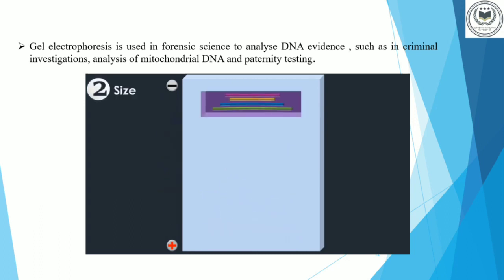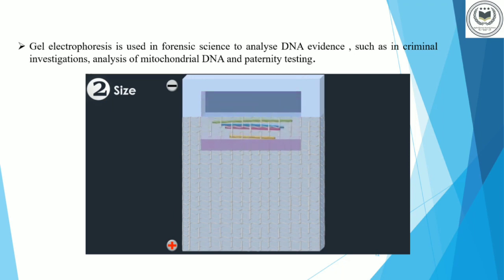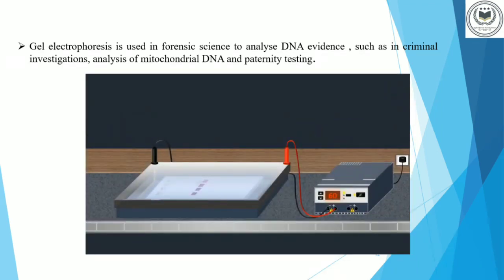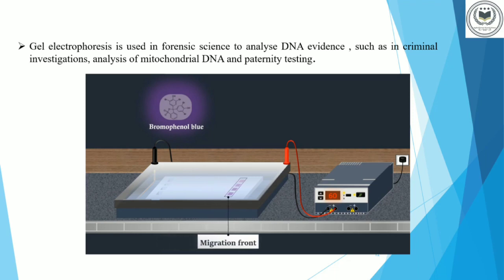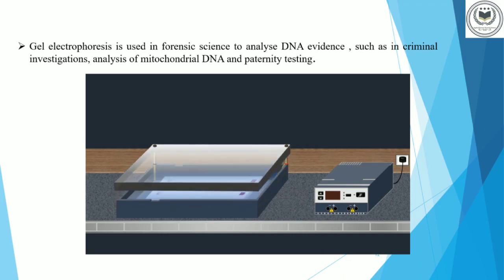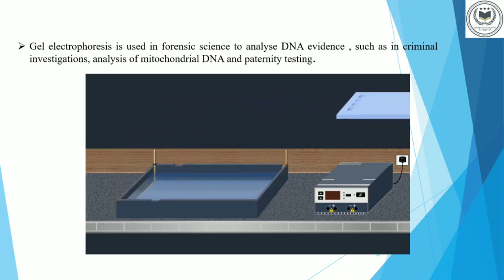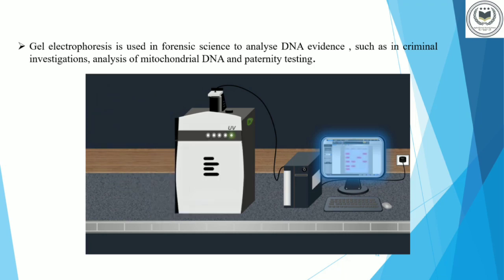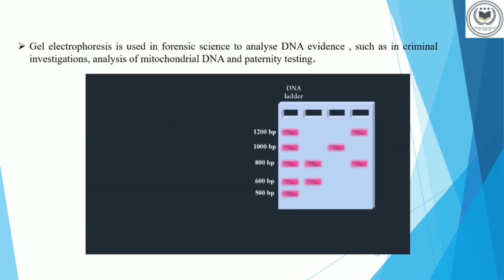Because all DNA fragments have the same amount of charge per mass, small fragments move through the gel faster than large ones. Due to the relatively small molecule size of bromophenol blue, it migrates faster than DNA, and by optical control of the migrating colored band, the electrophoresis can be stopped before the samples have completely migrated through and left the gel. Once the DNA fragments have been separated, the gel is placed under UV light, and the DNA fragments can be seen as bands. Each band contains a large number of DNA fragments of the same size. By comparing the DNA bands of the samples to the DNA ladder, we can determine their approximate sizes.